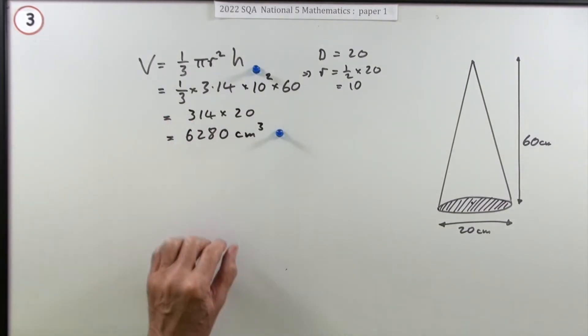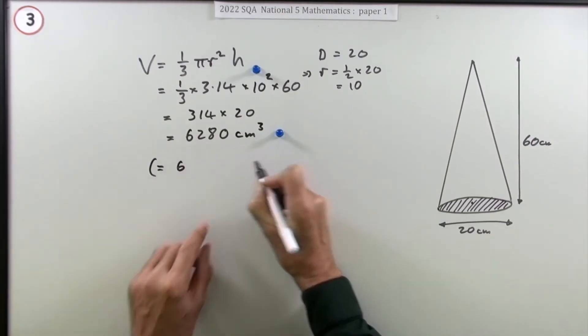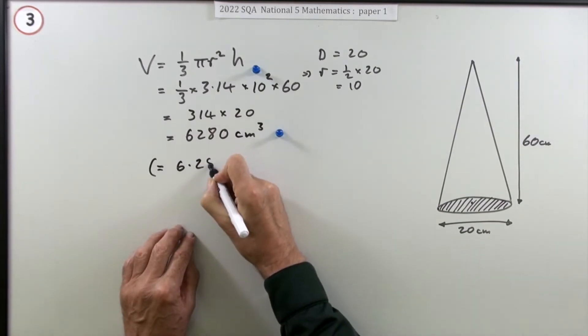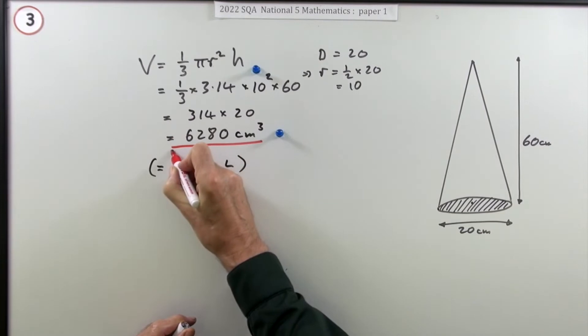That gets the last mark. I don't see any mention of it saying liters, so there's no point changing into liters. If you wanted to change into liters there's a thousand cc's in a liter - it'd be 6.28 liters - but it didn't ask for that, so this is the answer here.